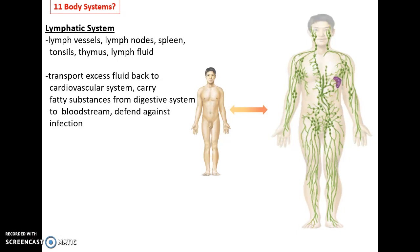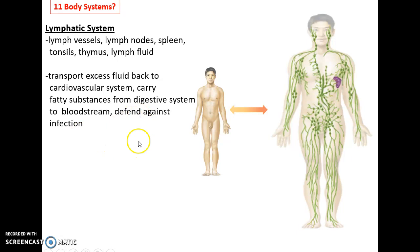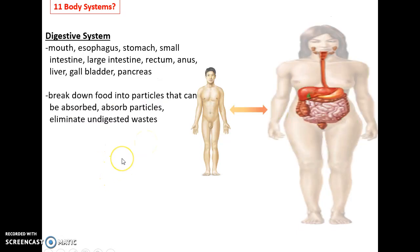The lymphatic system is a series of lymph vessels that pass by lymph nodes, the spleen, tonsils, and thymus, carrying lymph fluid. It moves excess fluids back into the cardiovascular system, carries fatty substances into the bloodstream, and defends against infections. The digestive system — mouth, esophagus, stomach, large intestine, small intestine, etc. — breaks down food both physically and chemically so it can be absorbed, absorbs those particles, and eliminates anything that is undigested.